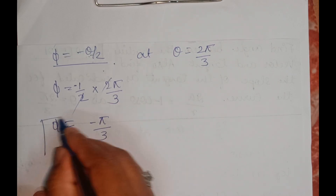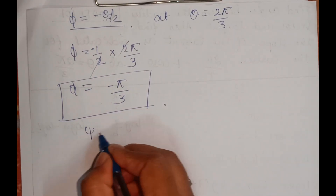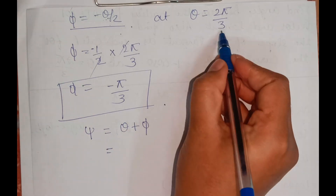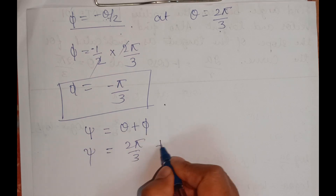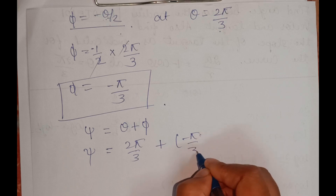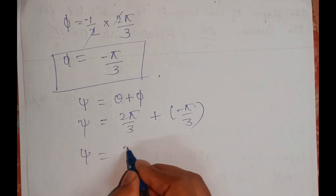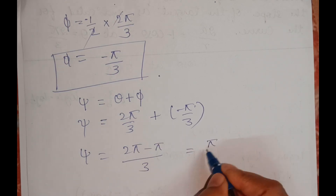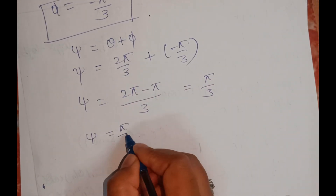Now using the relation ψ = θ + φ: we know θ = 2π/3 and φ = -π/3. So ψ = 2π/3 + (-π/3) = (2π - π)/3 = π/3.